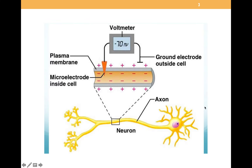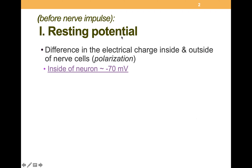So we see a neuron here, which in this state is said to be polarized. That is, the inside of the neuron shown in orange is more negative than the outside of the neuron shown in white with the plus signs. So the intracellular environment is more negative than the extracellular environment, as shown here by the voltmeter.